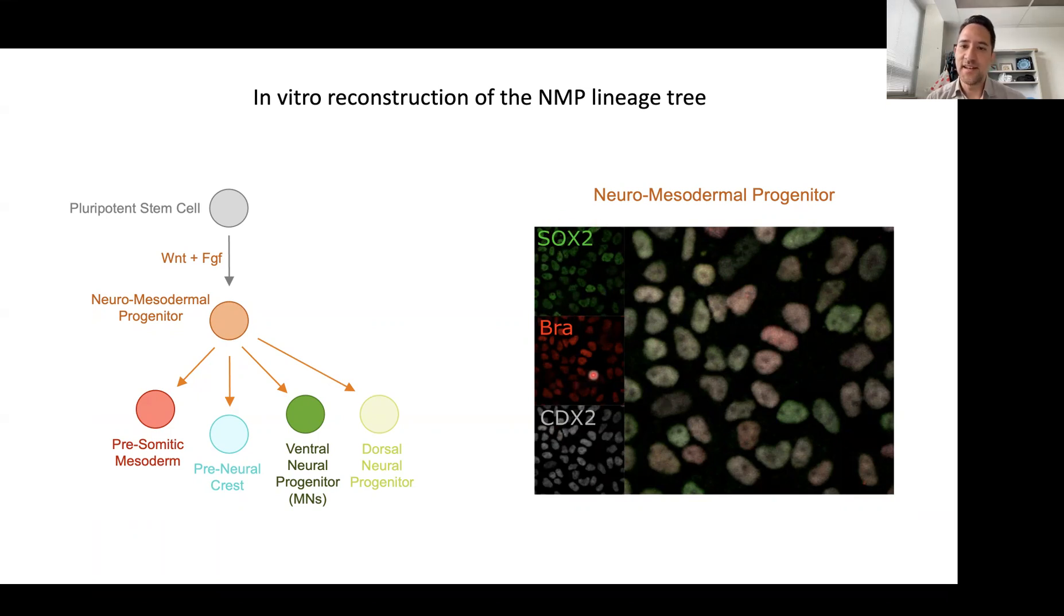Sox2 is a neural transcription factor. Brachyury is a mesodermal transcription factor. When they are both present in these cells, it confers them the bipotency to derive both the mesodermal lineages and the neural lineages. Then CDX2 is an important one because it would confer the ability to upregulate Hox genes, for example.